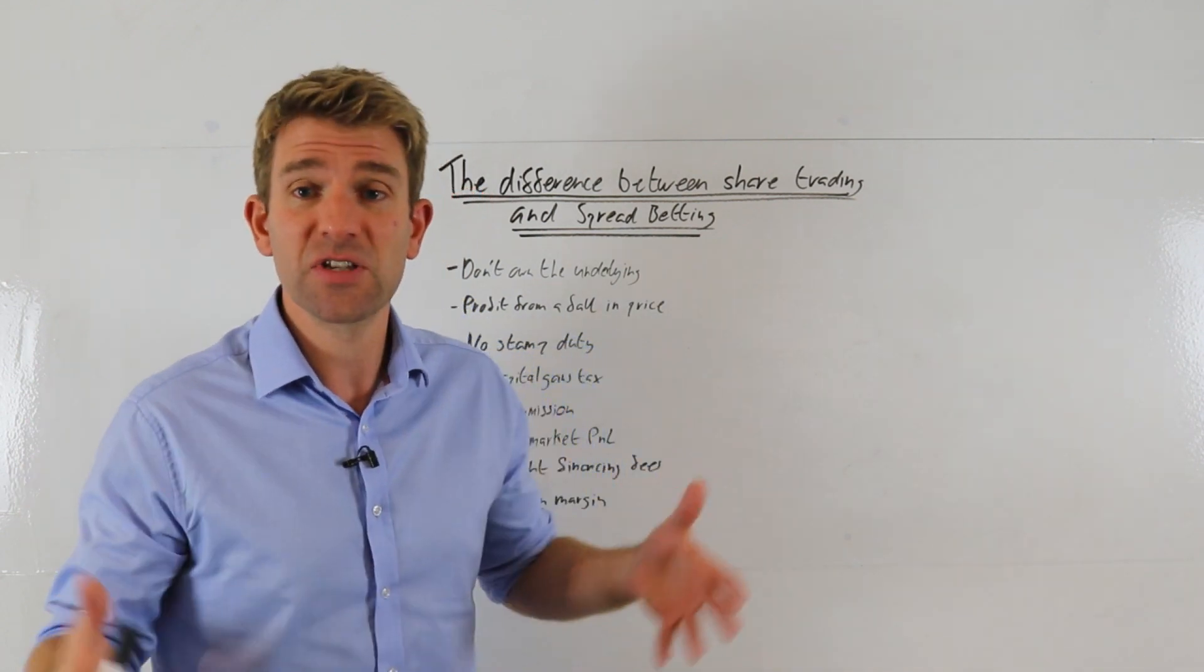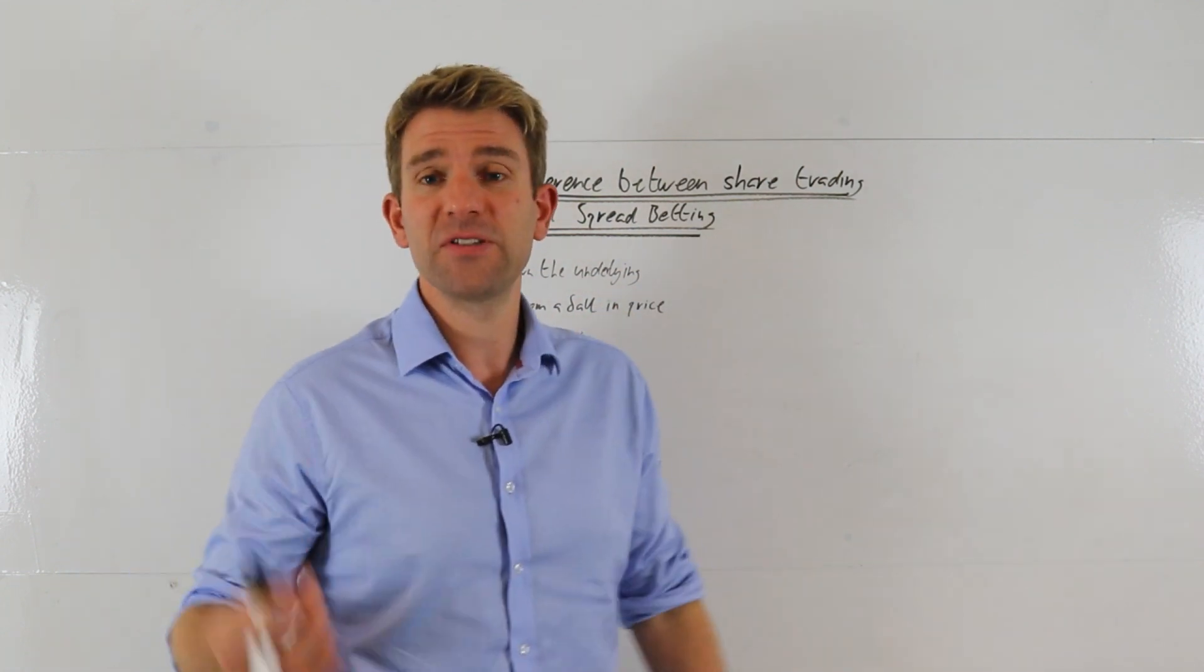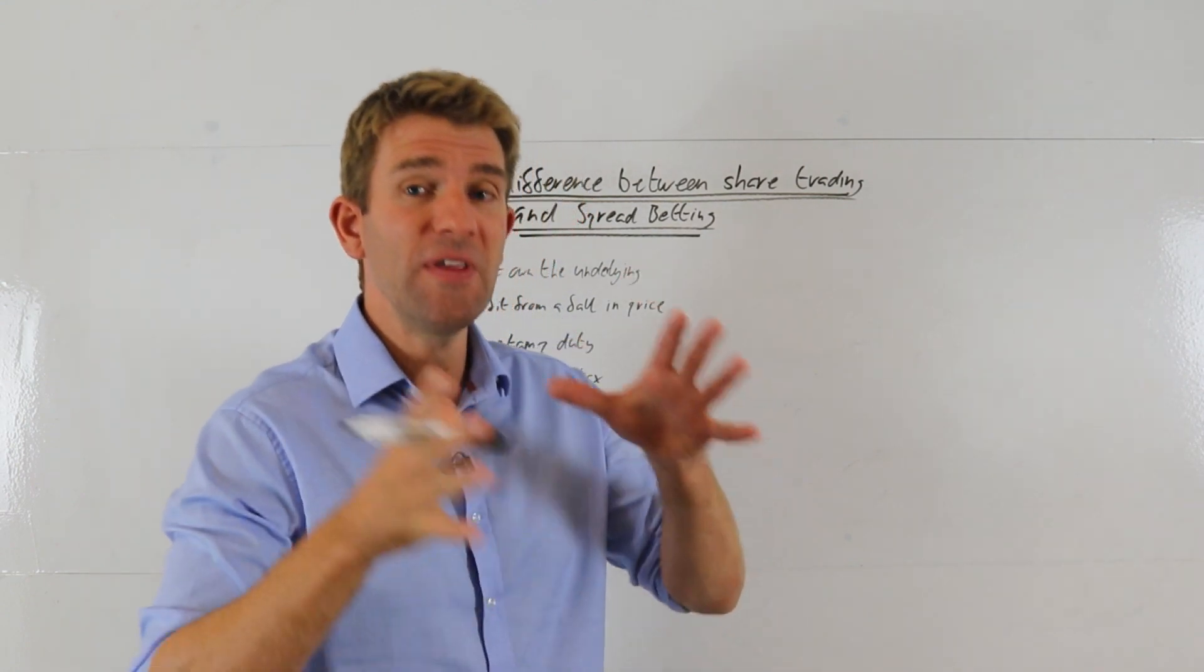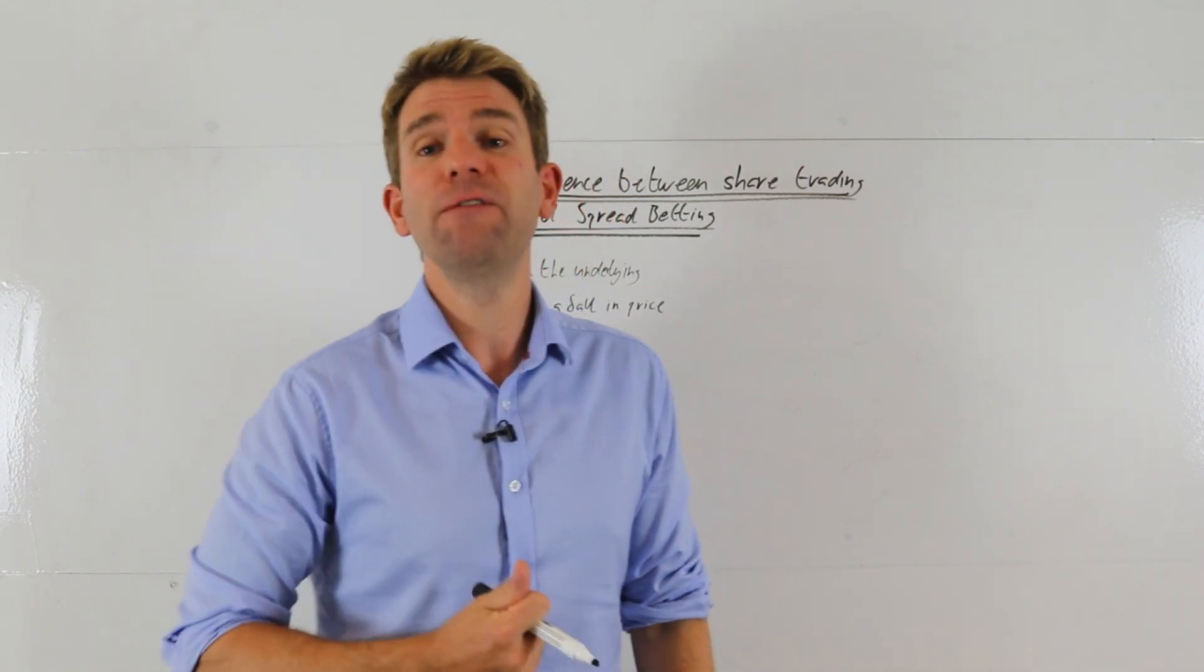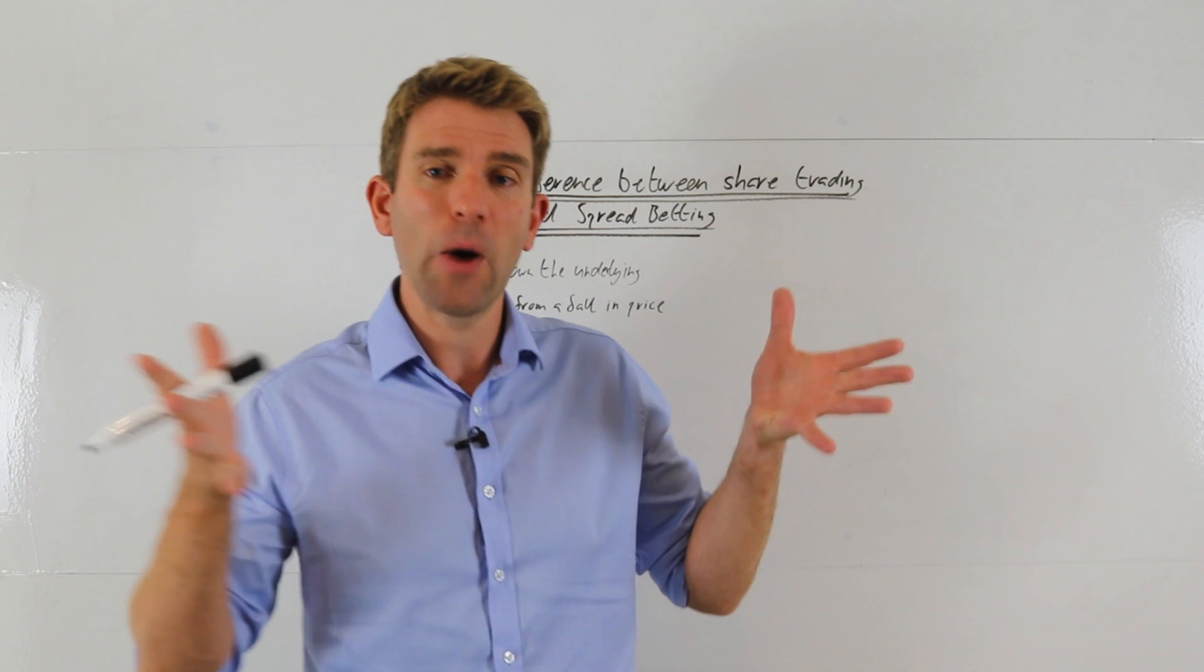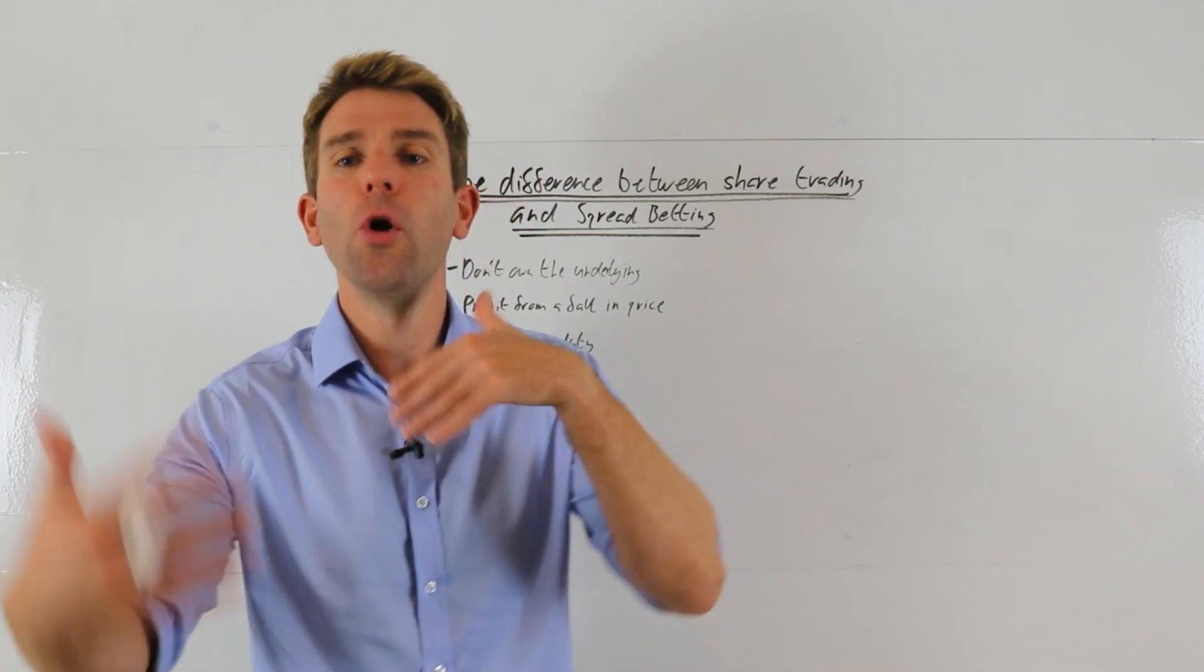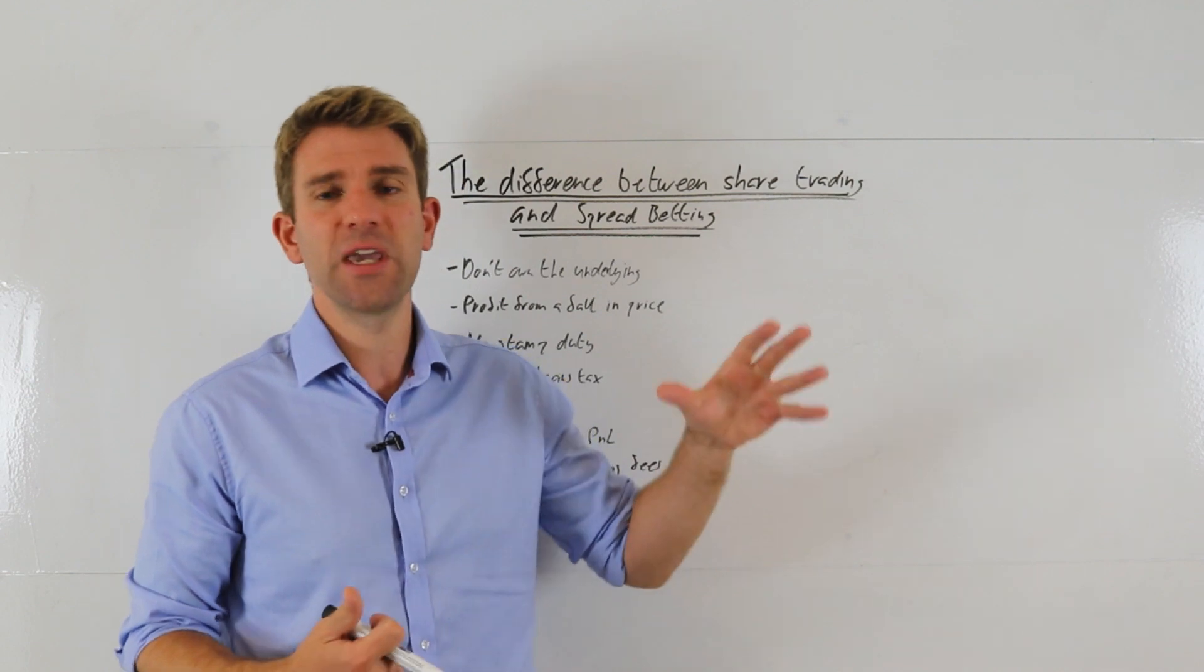And of course we can bet on shares, we can bet also on FTSE 100, indices, commodities, currency pairs, etc. But for this example, let's stick with share trading. The other great thing with spread betting is you can easily bet on a fall in price. Again, because you're not owning the underlying asset, we can place a bet that says, hey, I think BP shares are going to fall over the next few months, few weeks, whatever timeframe we're looking for, and we can place that bet.